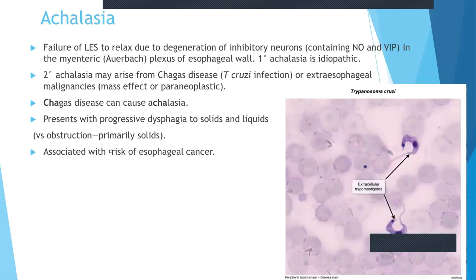Now let's talk about achalasia. When there is failure of the lower esophageal sphincter to relax due to degeneration of inhibitory neurons in the myenteric plexus of the esophageal wall, that leads to achalasia, which is generally primary and idiopathic. But in some cases it is secondary and arises from Chagas disease via Trypanosoma cruzi infection, or from extra-esophageal malignancies with mass effect or paraneoplastic syndromes.